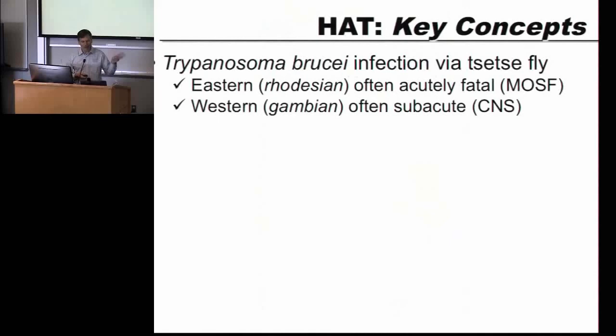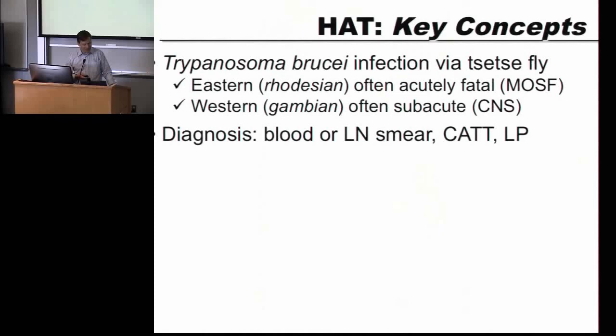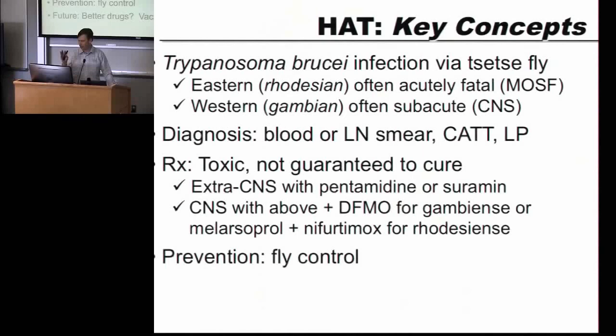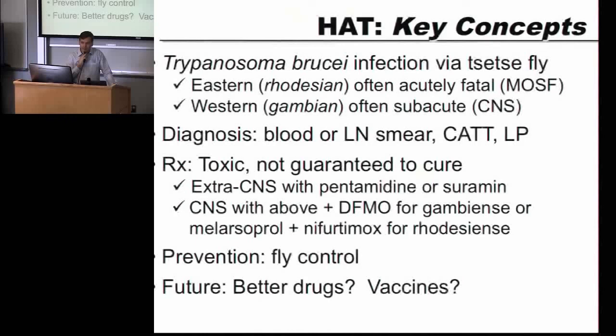After each of these lectures I'll give you key concept slides. Remember: there are two flavors of HAT. You can make a diagnosis looking in the lymph juice, in the blood, or using the Card Agglutination Test for Trypanosomiasis. You need to know if it's in the brain — if it is, you've got to treat with a very toxic, challenging medication regimen. We prevent this by fly control. We desperately need new medications and vaccines. And yes — avoid wearing blue and black clothing. Ask any tropical medicine doctor; if they go on safari, they won't wear blue or black.